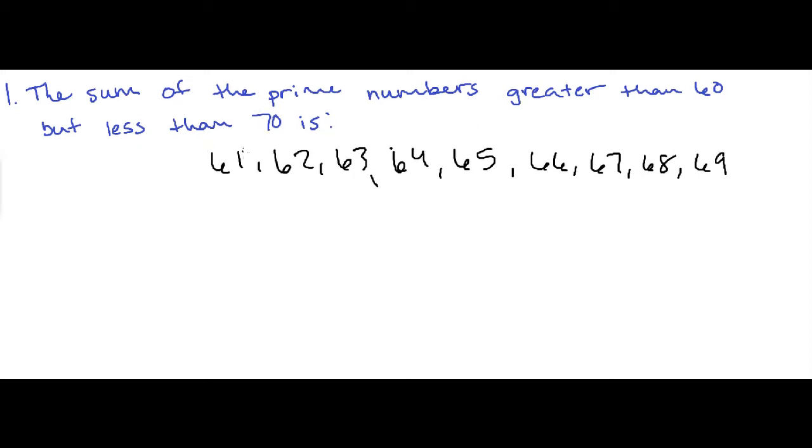Now they are narrowing down this set to the prime numbers. If you remember what a prime number is, it's a number that has a factor of 1 and itself. The first thing we can automatically do is eliminate the even numbers because the even numbers are going to have 2 as a factor. Let's go ahead and get rid of 62, 64, 66, 68.